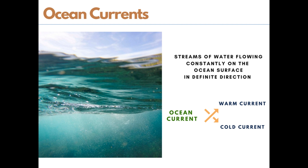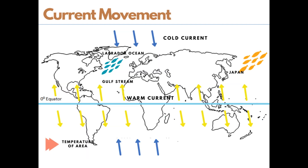Ocean current is a stream of water flowing in oceans in a definite direction. Ocean currents are warm or cold. Warm ocean currents originate near the equator and move towards the poles — the Gulf Stream is an example of a warm current. Cold currents bring water from polar or higher latitudes towards tropical and lower latitudes — the Labrador Current is an example of a cold current. Ocean currents influence the temperature of an area. An area where warm and cold currents meet is considered the best ground for fishing, such as around Japan and the eastern coast of North America. These areas also experience foggy weather, making navigation difficult.